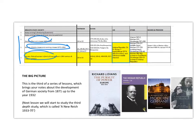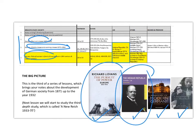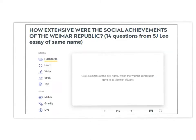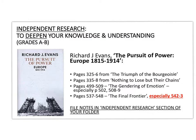The reading for this topic includes Richard Evans' 'The Pursuit of Power,' Stephen Lee's 'The Weimar Republic,' and also 'A History of Modern Germany' by Kitchen and 'A Social History of the Third Reich' by Grunberger — all those extracts are on the Padlet page. There is also a Quizlet with 14 questions based on the Stephen Lee essay 'How Extensive Were the Social Achievements of the Final Republic,' which includes quite a bit about women.